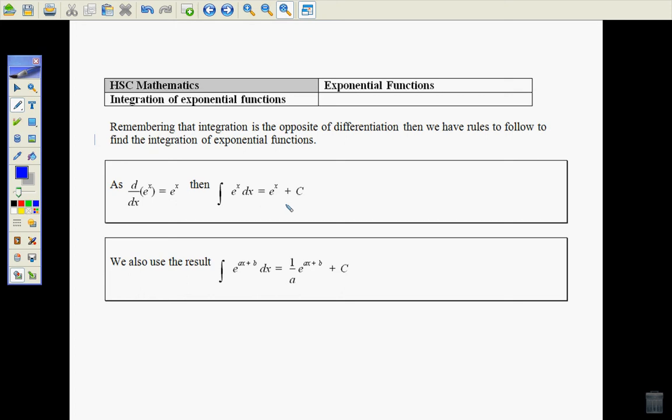So if we consider that the derivative of e to the x is e to the x, as we've learned before, then it must work out that the antiderivative or the integral of e to the x is e to the x plus some constant. So we're just reversing it, and see how it stays the same there when we integrate.